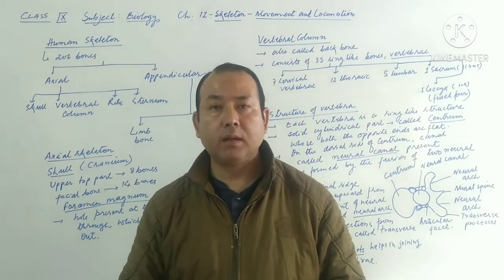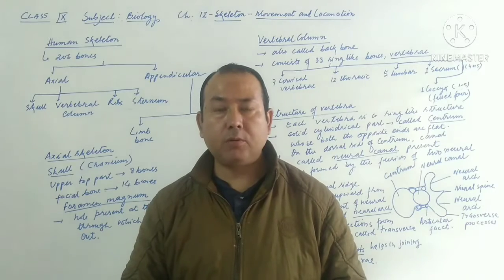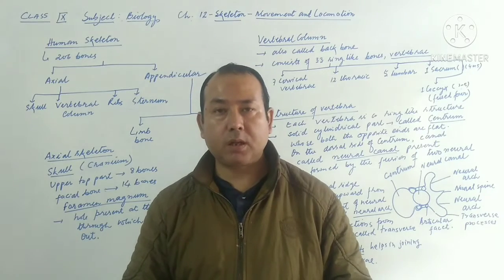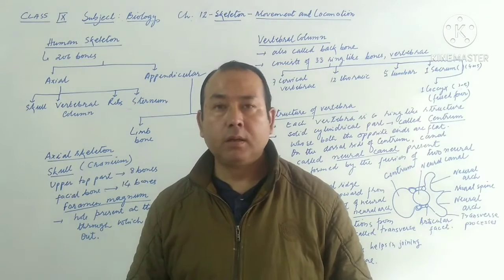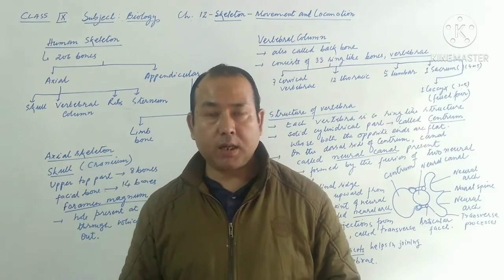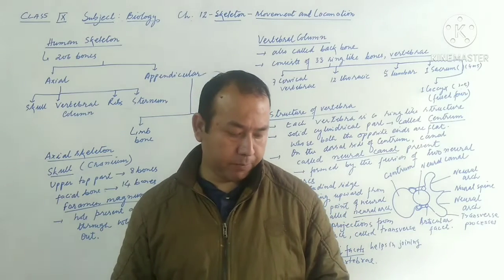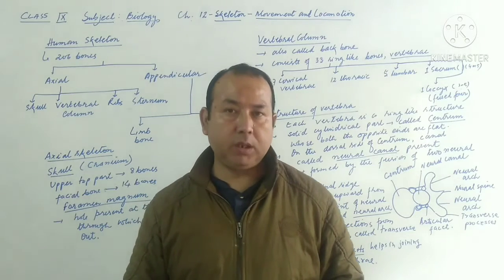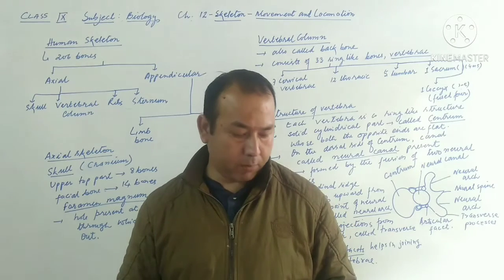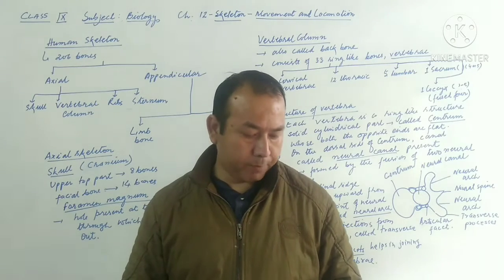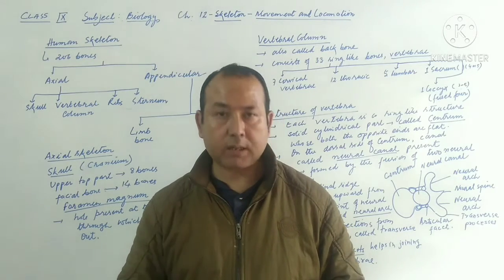Then after that, we also learned about the structure of the bone — about their internal structure, external structure, about the types of bone marrow: yellow bone marrow and red bone marrow. This all we have already discussed.